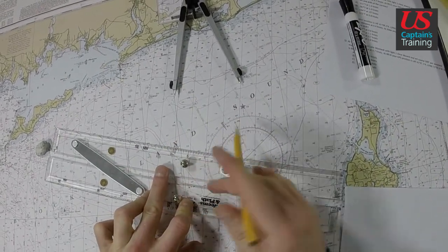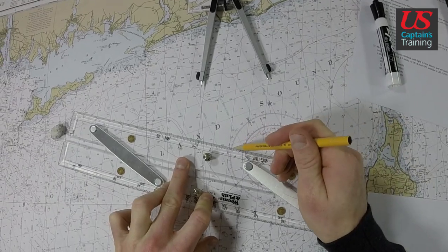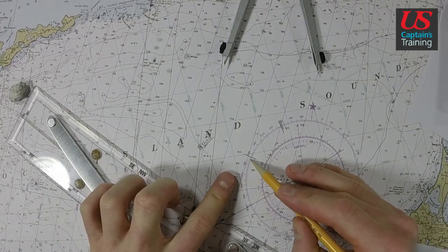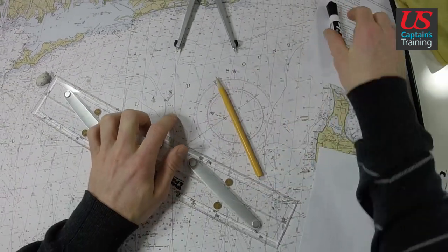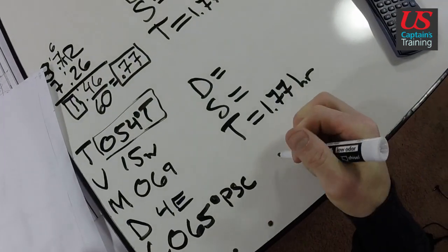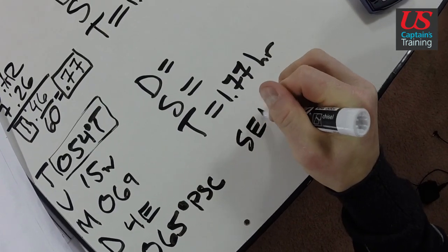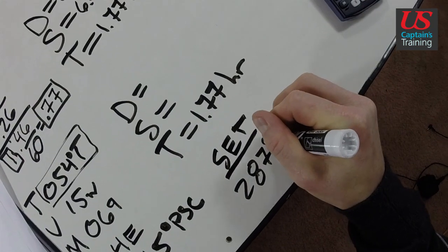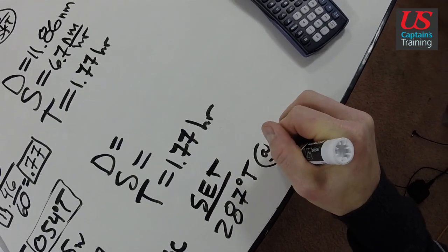This is the distance we got pushed, here is our set. So remember, from towards. So we go to the center of the compass, from towards. Our set's 280, 285, 6, 287. We got a set of 287 degrees true. At how many knots?